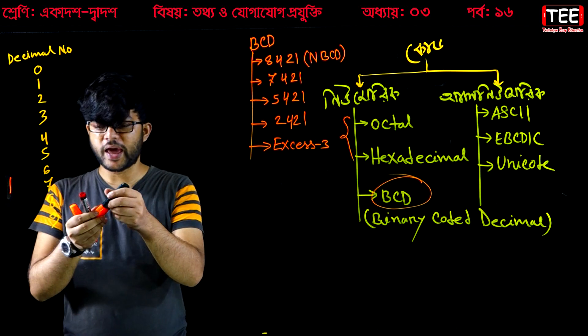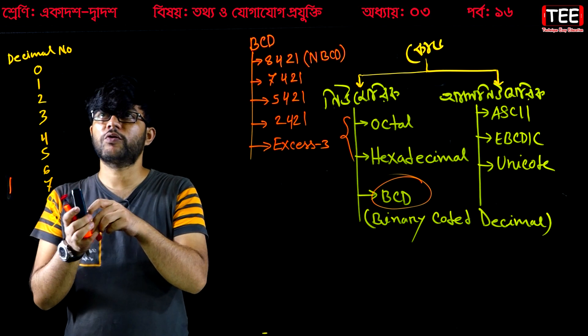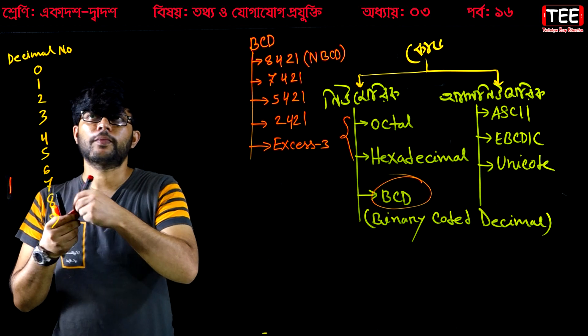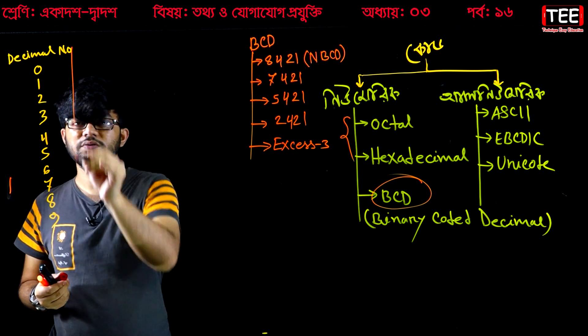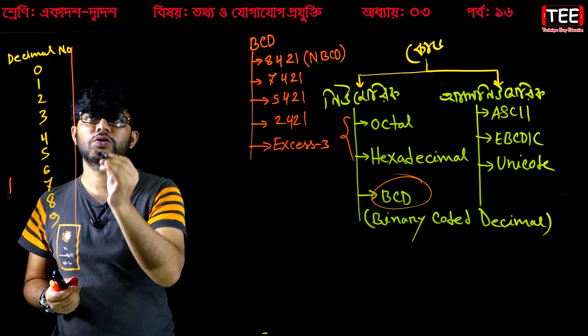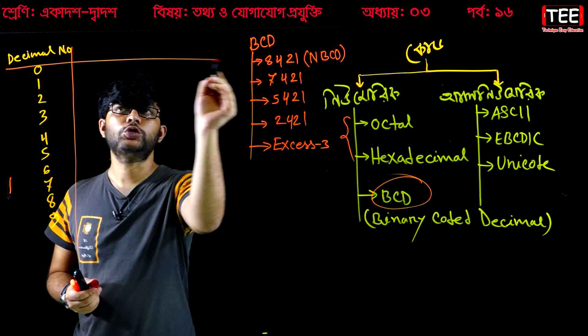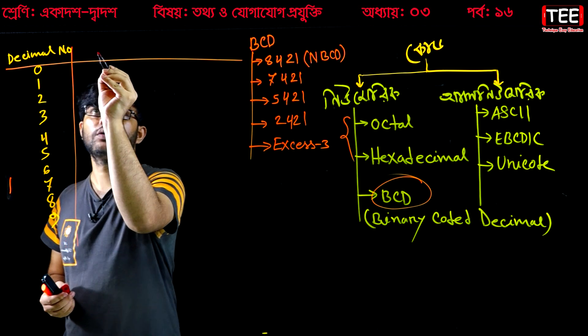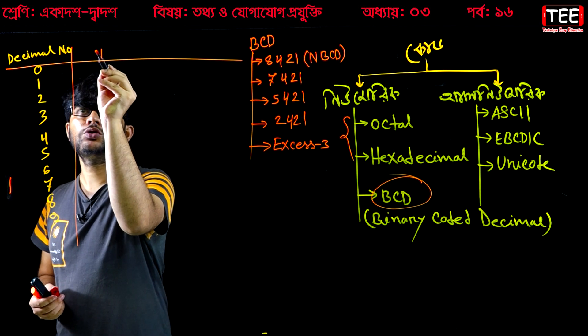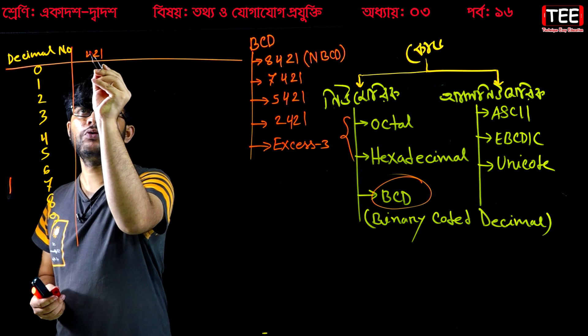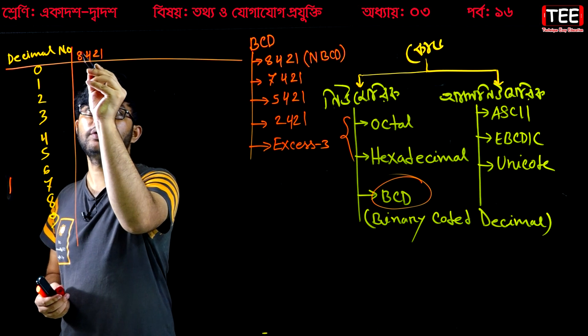The format of a BCD code is 1, 2, 4, 8. We know the BCD code format is 1, 2, 4, 8.